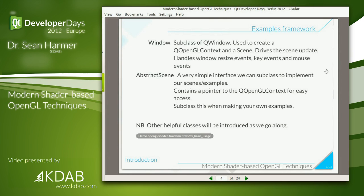Throughout this we'll look at a couple of examples and have some helper classes. Window is a very simple subclass of a new class in Qt 5 called QWindow — it represents a window. AbstractScene is a simple interface with entry points just like QGLWidget from Qt 4: it has initialize, resize, and paint functions. Additionally, it has an update function where we can update scene variables — it's not OpenGL-dependent at all, we're just modifying regular member variables.